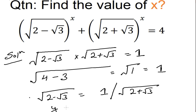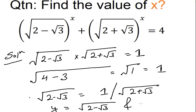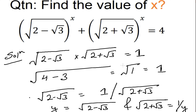So if we let y = √(2 − √3), then √(2 + √3) = 1/y. That is what we are going to substitute into the original equation.